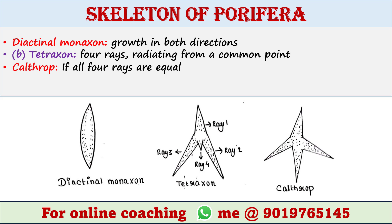Next is diactinal monaxone. When growth occurs in both directions — that is, the spicule grows at both ends — the spicule is called diactinal monaxone.